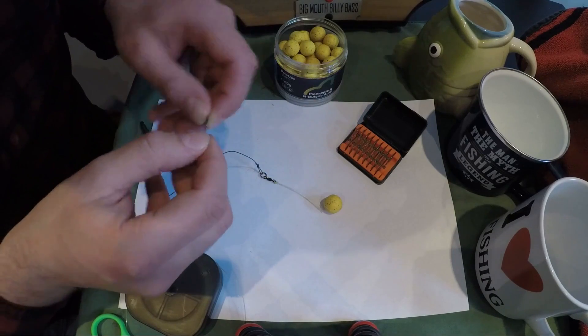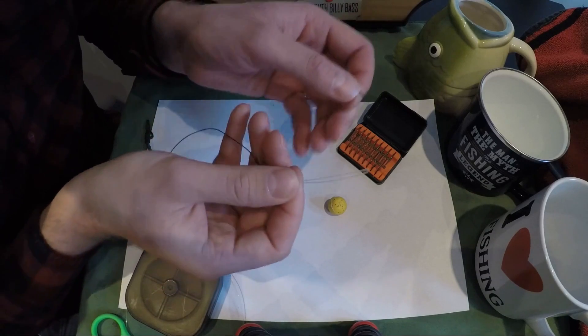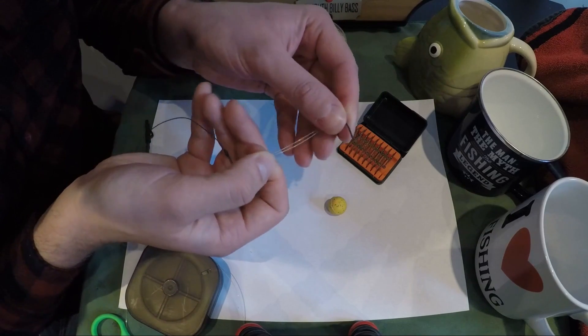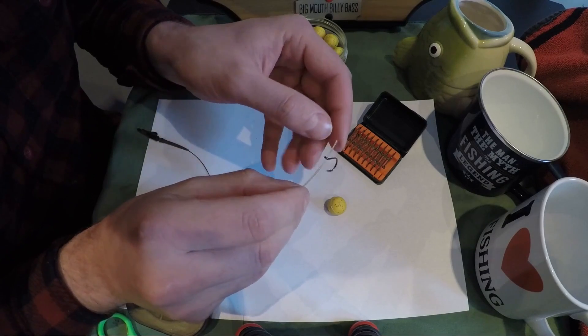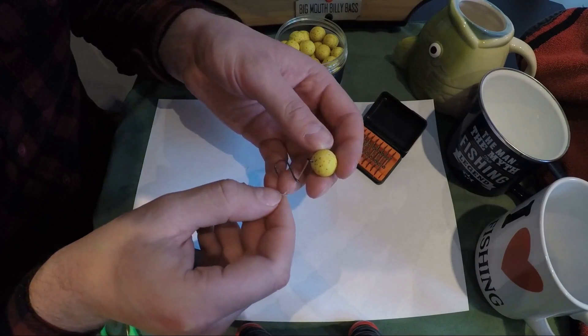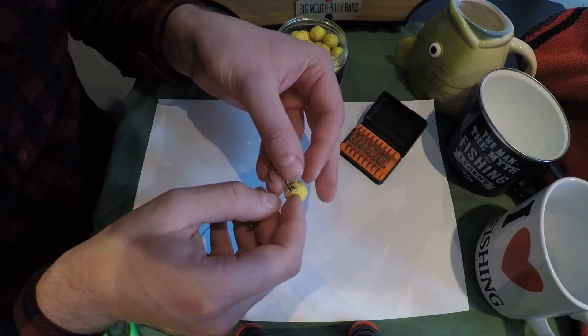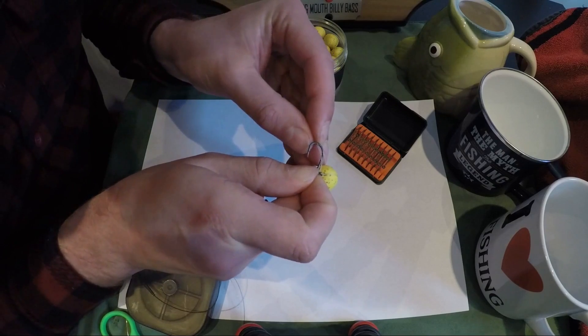Push your hook section through the front of the eye of the hook, there we go, through the rig ring, and then put the loop back over the point of the hook.